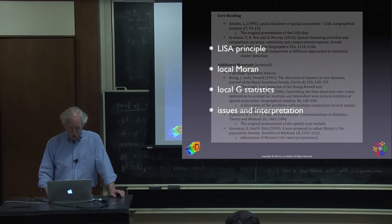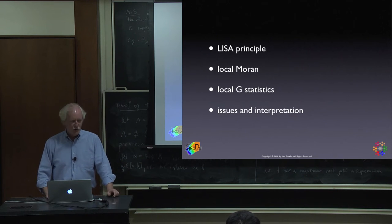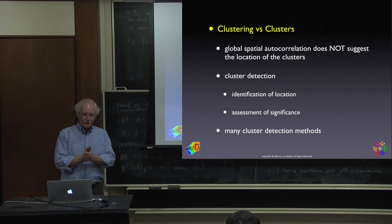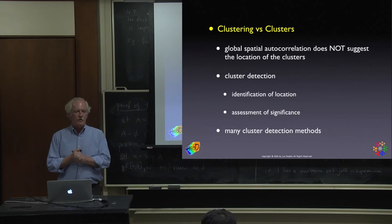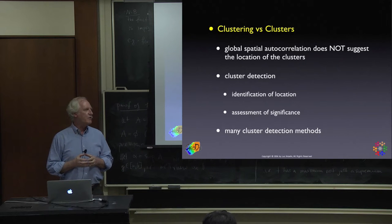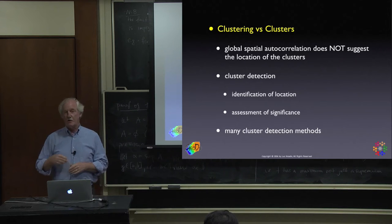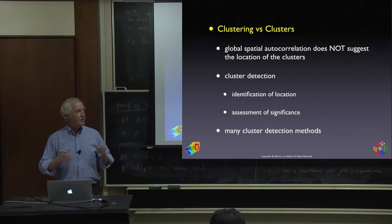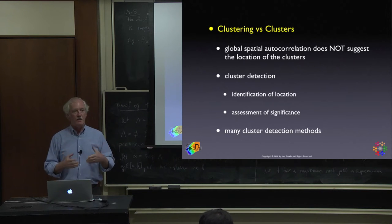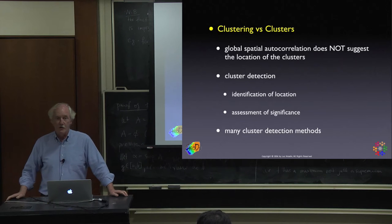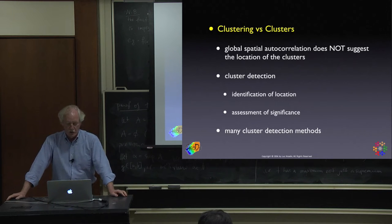The principle behind local indicators of spatial autocorrelation involves a key distinction between clustering and clusters. With global spatial autocorrelation measures — Moran's I, Geary's C, and variogram analysis — we characterize the pattern as a whole. The null hypothesis in all instances is spatial randomness, which we try to reject in favor of positive or negative spatial autocorrelation, or describe via a variogram function.